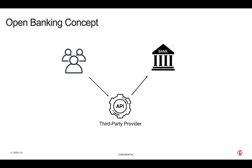For that, the TPP needs the end user's permission, so the end user will have to log in to their bank, obtain an access token securely transmitted to the TPP, which will use it to perform the API calls.